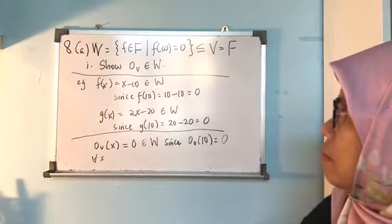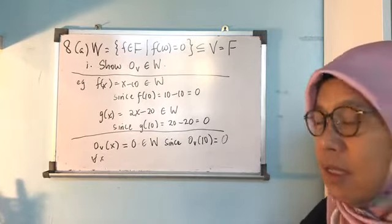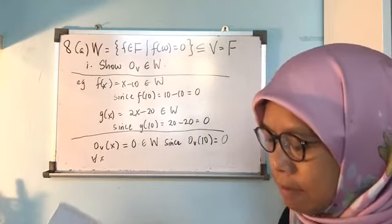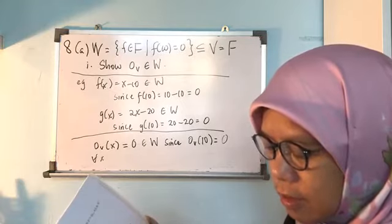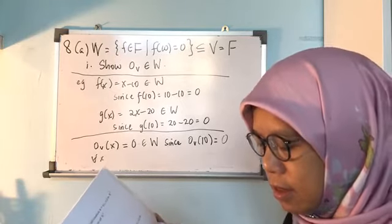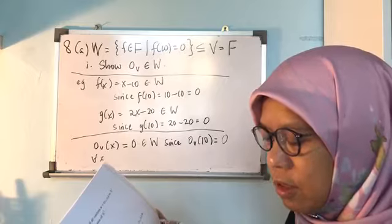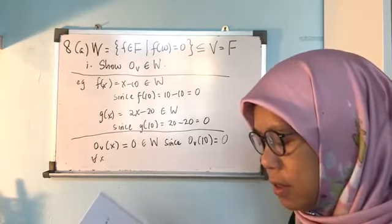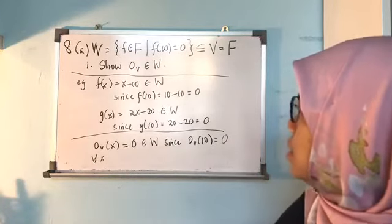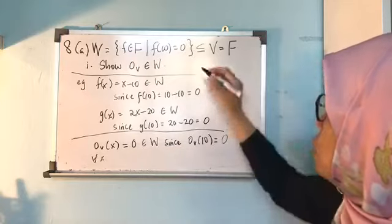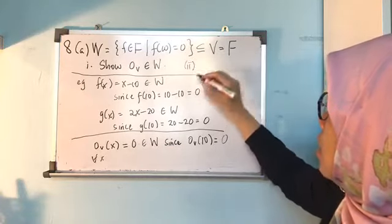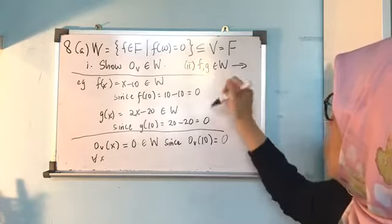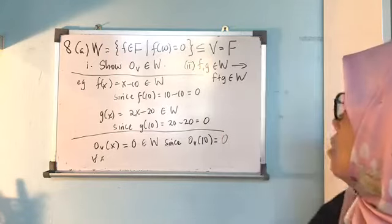That's condition one. It's very easy. If the zero function does not satisfy the condition, it's definitely not a subspace — like example part c, where the zero function equals 1 instead of 0, so c is definitely not a subspace. The second condition is: if f, g are in W, you have to show f + g is also in W.